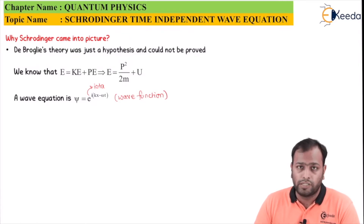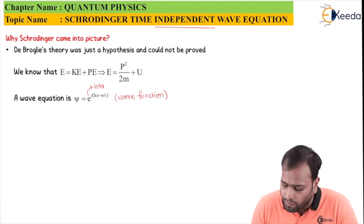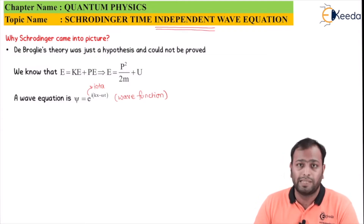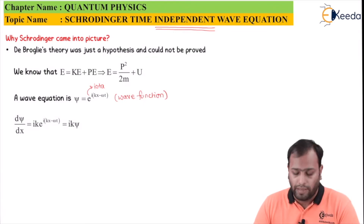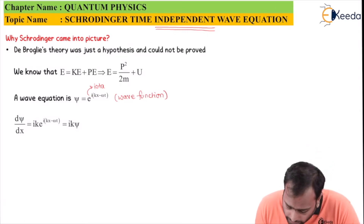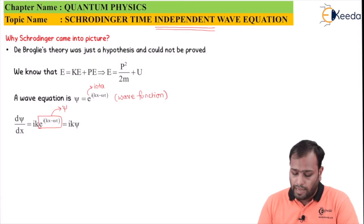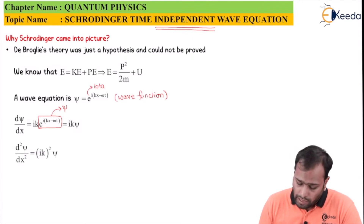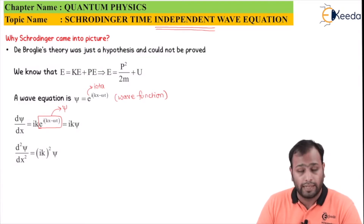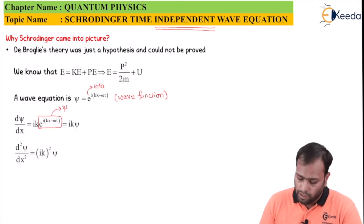The very first step of the derivation is taking the first derivative of the psi function with respect to x. Do remember we are deriving the time independent wave equation, so we don't want any time factor — no t factor in the derivation. Taking differentiation of psi with respect to x gives dψ/dx = ik · e^(i(kx − ωt)). This quantity is the same as psi, so replacing it we get the first derivative equal to ikψ. The second derivative becomes (ik)² · ψ with respect to x, because taking the derivative again brings another ik factor, and ik multiplied gives (ik)² times psi.